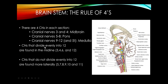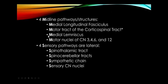Cranial nerves 3, 4, 6, and 12 are found along the midline; the others are more lateral. Midline pathways include the medial longitudinal fasciculus, the corticospinal tract, the medial lemniscus, and the motor nuclei for CN3, 4, 6, and 12. For example, medial medullary syndrome involves the medial lemniscus, the corticospinal tract, and CN12. Sensory pathways — the spinothalamic tract, spinocerebellar, sympathetic chain, and sensory cranial nerve nuclei — are more lateral.